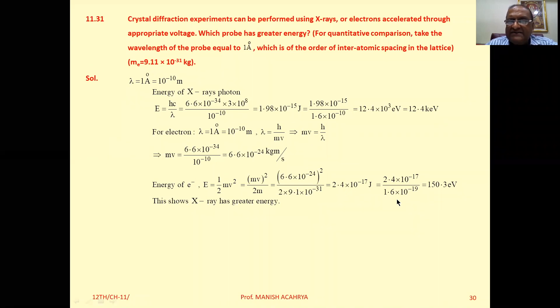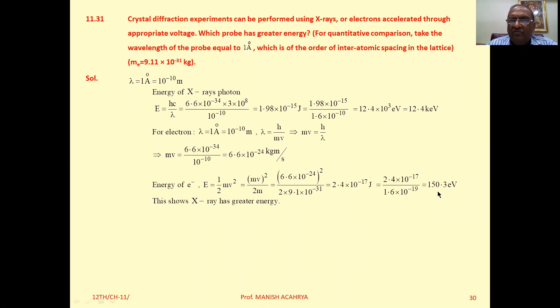Then divide it by 1.6 into 10 raised to minus 19, you will get energy in terms of electron volt. So here energy of X-ray photons that is large compared to energy of electron. Clear to all of you.